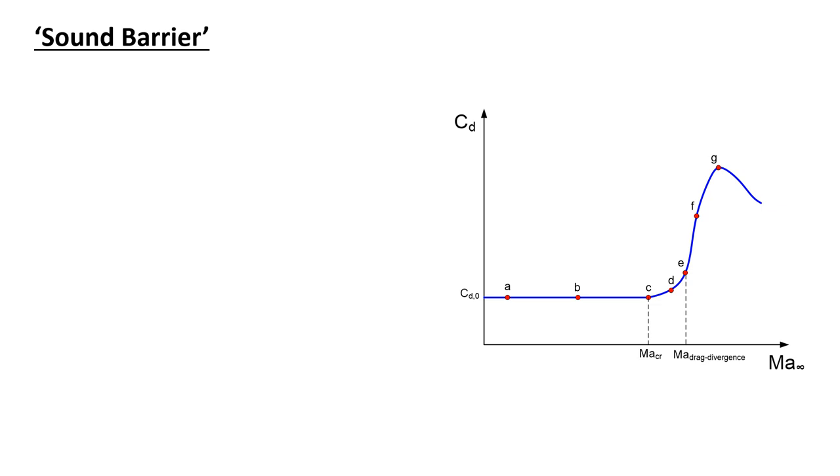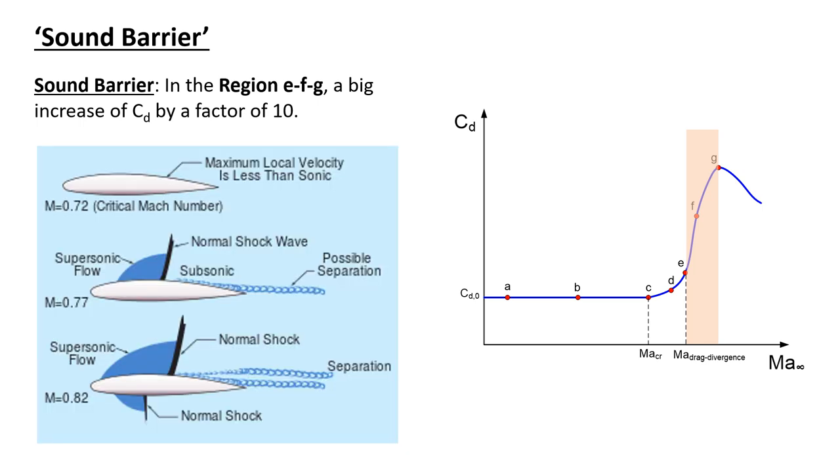So regarding sound barrier, we are talking about the region in EFG, along that part of the curve. In that region, the Cd will increase by a factor of 10, so it's a significant increase, so big increase, and it's like a barrier for the aircraft to overcome. That's why we call it sound barrier. And actually, we've already seen what happens in the flow.